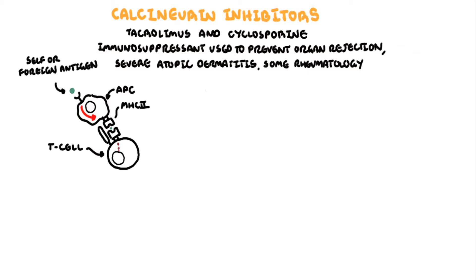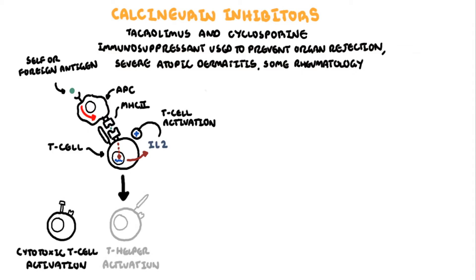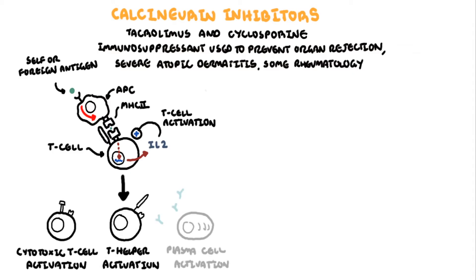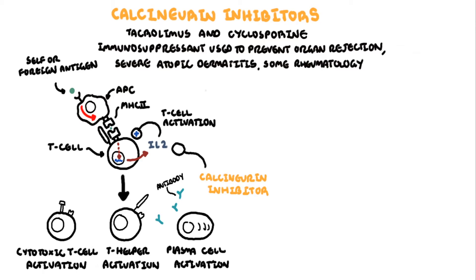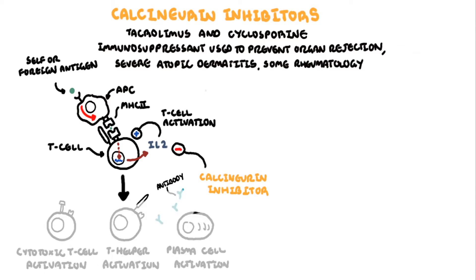These T cells will become activated and they require interleukin-2, a key autocrine T cell activator. Activation of T cells will stimulate the adaptive immune response consisting of cytotoxic T cells and T helper cells, and they will also activate plasma cells — the antibody-producing cells. Calcineurin inhibitors inhibit calcineurin, a key protein required to allow transcription of interleukin-2, the key autocrine T cell activator.